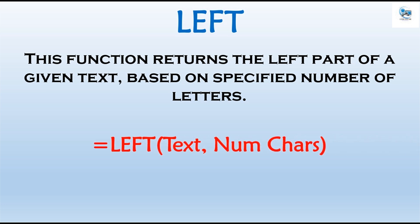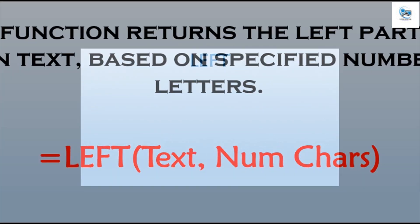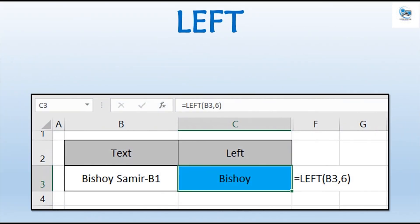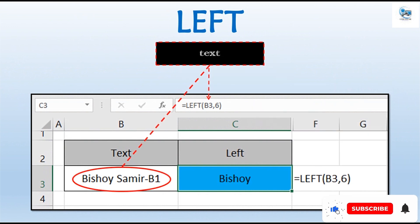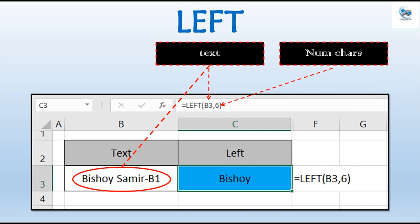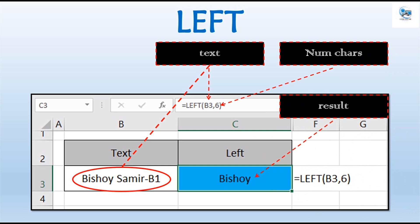This function takes only two arguments. The first argument is the text you want to return part of. The second argument is the number of characters you want to return. For example, if we have 'Pishoi Samir-P1' and we want to return only 'Pishoi', we use the LEFT function. The first argument is the cell containing that text, the second argument is six characters. And here we go — the result is 'Pishoi'.